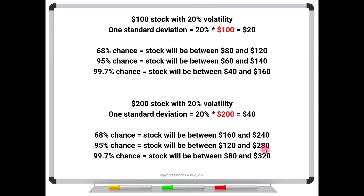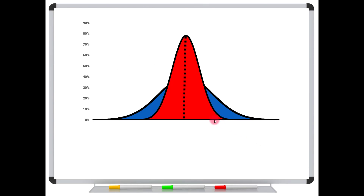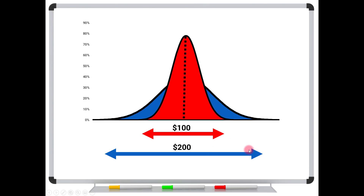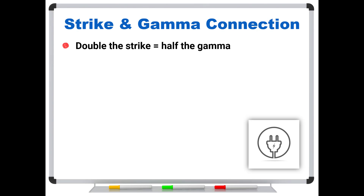This is going to drive the stock price-gamma relationship. Looking at it graphically, we have two bell curves — the red one for a $100 stock and the blue one for a $200 stock. The center of the bell curve represents the current stock price. When we double the stock price to $200, the bell curve gets twice as wide, which means it gets squashed down to half the height. So here's the most important thing to remember: if you double the strike, you're going to have half the gamma. Going from a $100 strike to $200, the gamma gets cut in half. And of course, if you halve the strike, you're going to double the gamma.